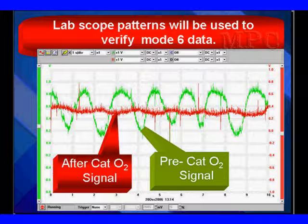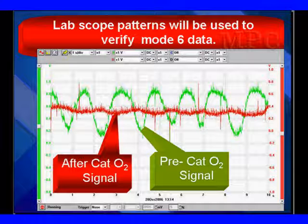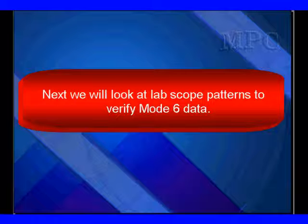Here's what it looks like signal-wise. We have the red trace as the after catalyst O2 — you can see it has very small movement. The pre-cat or fuel control O2 is in green, and you can see there is a great deal more movement. To verify what we have here, because you can get confusion between max and min, we need to go look at lab scope patterns.